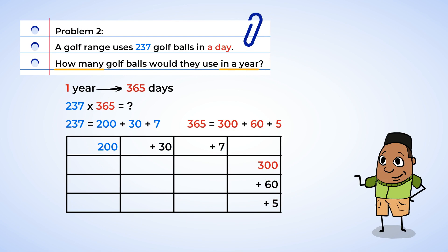When multiplying, we can multiply the non-zero numbers, and then just add in the zeros to get the correct value. 200 times 300. Well, 2 times 3 is 6. And there are 4 zeros total in the numbers 200 and 300. So we add those 4 zeros to the end of 6, and we get 60,000.